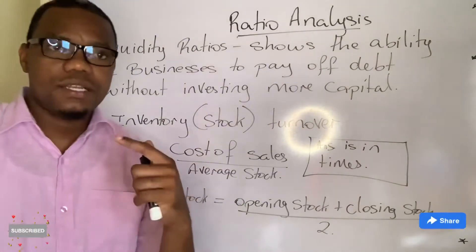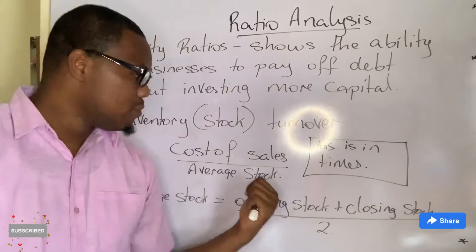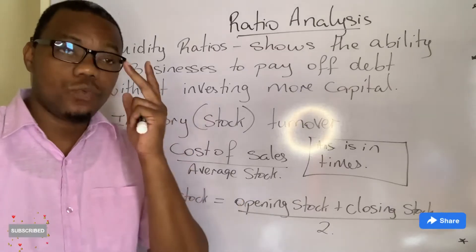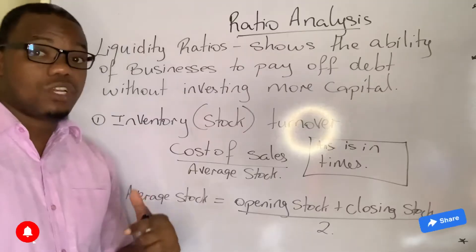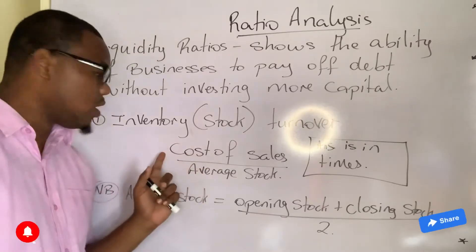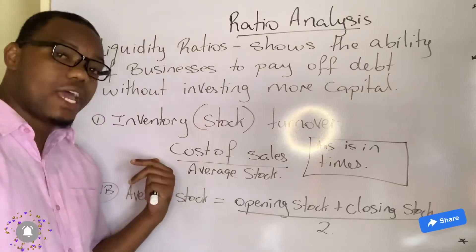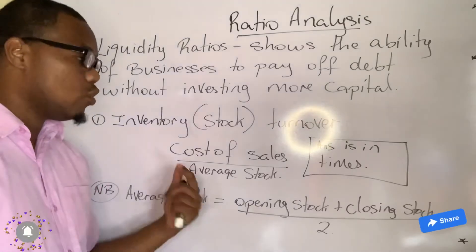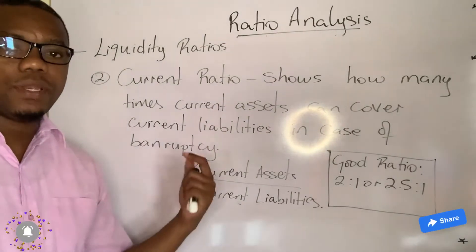The difficult thing about this topic is not remembering the formula — the names can help you remember the formulas — but it's actually picking up the figures. You have to know where to find cost of sales. Cost of sales is what you subtract from your net sales figure to get your gross profit. In my next video when we are practicing, you will need to pay attention to picking up cost of sales. Now let's look at another liquidity ratio.